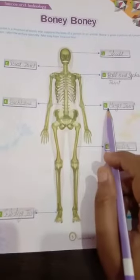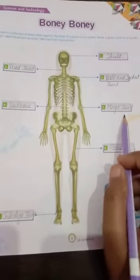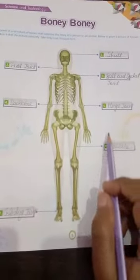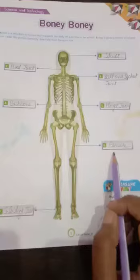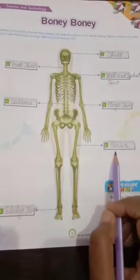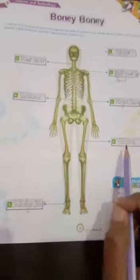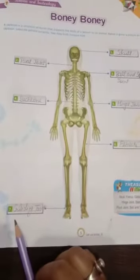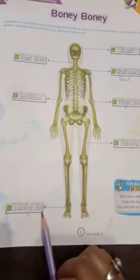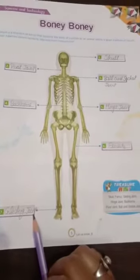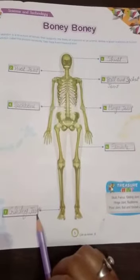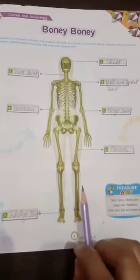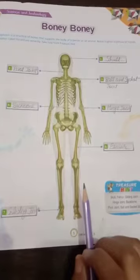Five: Hinge joint. Six: Femur. Seven: Gliding joint. Students, revise this.